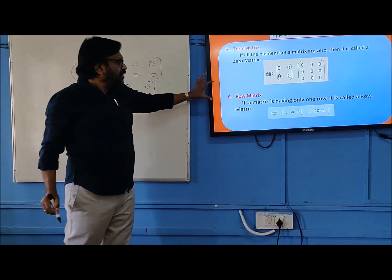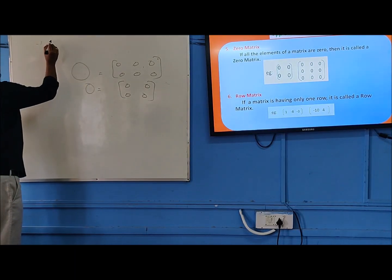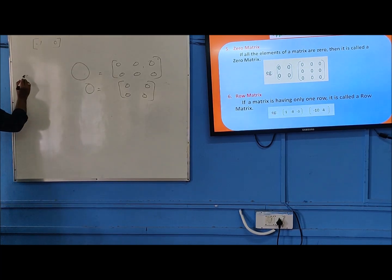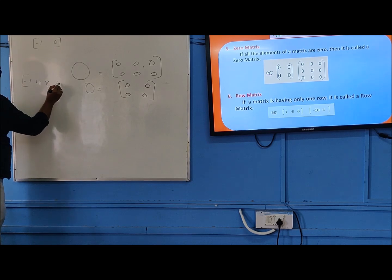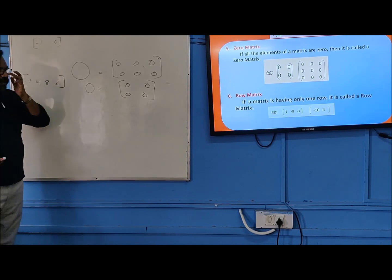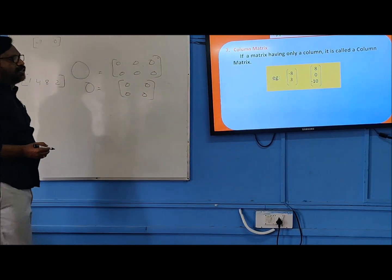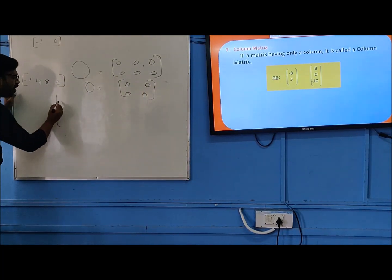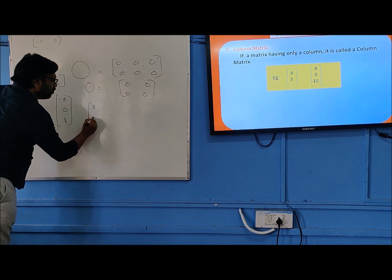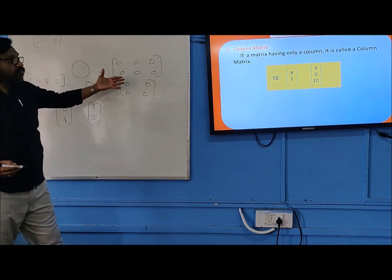Then, what is a row matrix? If a matrix has only one row — for example, a one row two column matrix, or another example: minus one with four columns — it is called a row matrix. If a matrix has only one row, it is a row matrix. Next, if a matrix has only one column, then we call it a column matrix. These are the types of matrices.